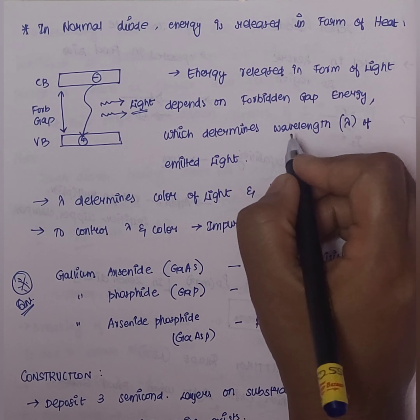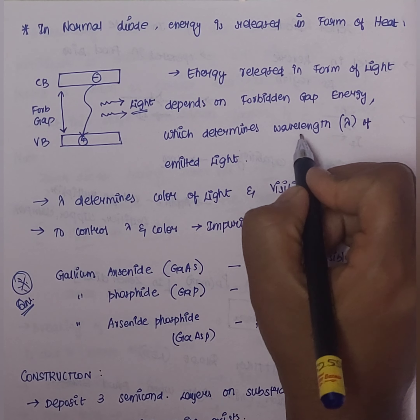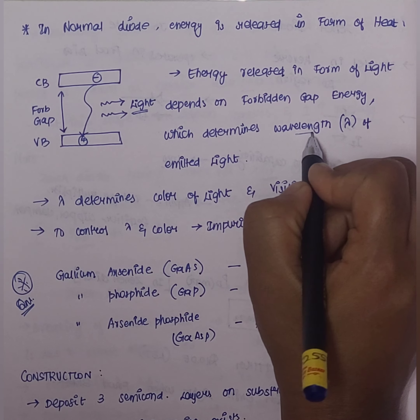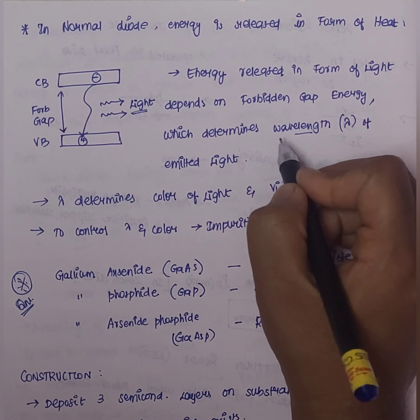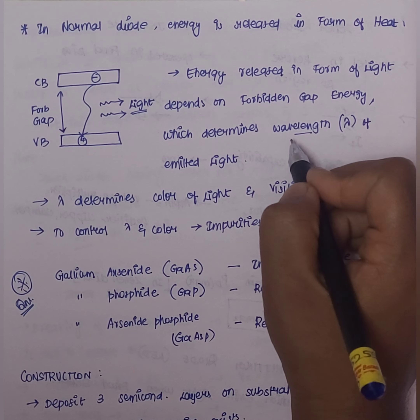If we look at the valence band, this is the wavelength of the light, and it determines the color and visibility.